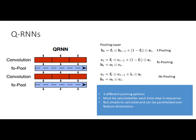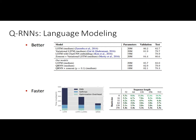After the convolution layer, you come to the pooling layer, where the recurrent-type computations occur. There are a few pooling variants proposed: f-pooling, fo-pooling, and ifo-pooling. The differences are in what inputs you take at the pooling layer. For fo-pooling, you take the forget gate multiplied by the previous memory, plus (1 - forget) multiplied by zt, and multiply the output by the current memory state. At this layer, things are processed in sequence, but the computation is lightweight — all the heavy work was done in the parallel convolution layer.